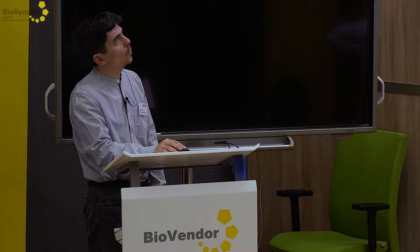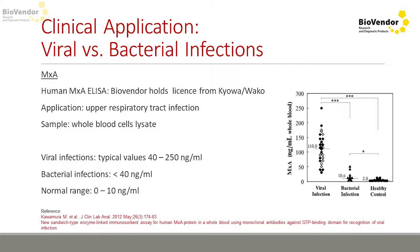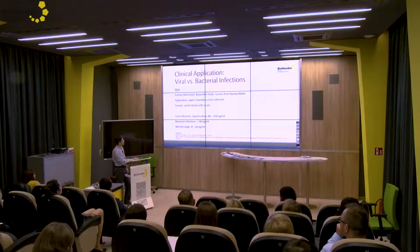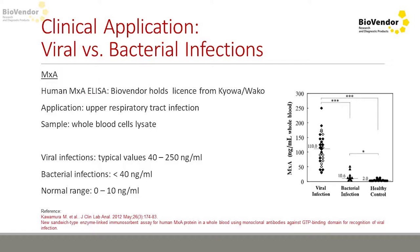We are proud that we hold a license from the company Kaiova, who actually developed the assay and published a very nice publication in 2012. We received the license and therefore use the same antibodies, the same dilution buffer, and the same detection system. Kaiova also evaluated our standards and internal control, so we can reference that publication for our product as well. In that publication, they introduced the immunoassay itself and presented clinical results in patients with upper respiratory tract infection. The marker can differentiate between viral and bacterial infection with a cutoff value of 40 nanogram per ml.